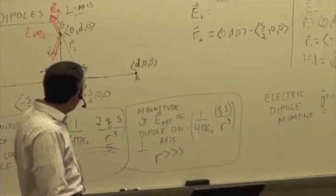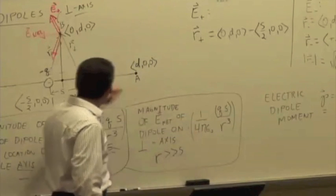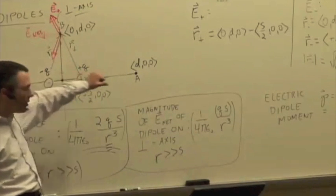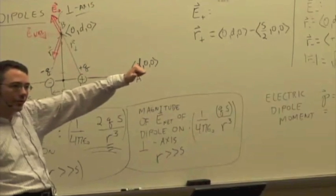Yes. This magnitude would be the same as if it were on the z-axis. That's correct. Because the z-axis is also perpendicular to the dipole.